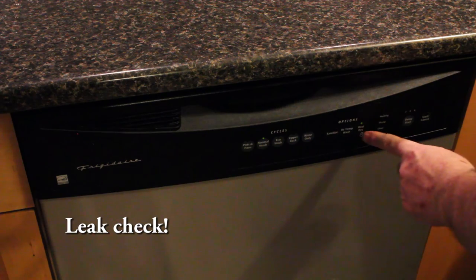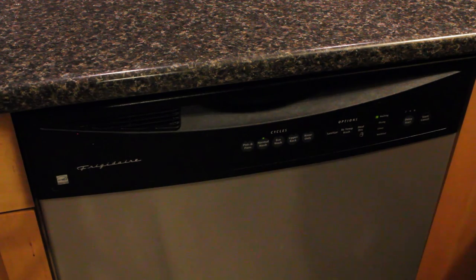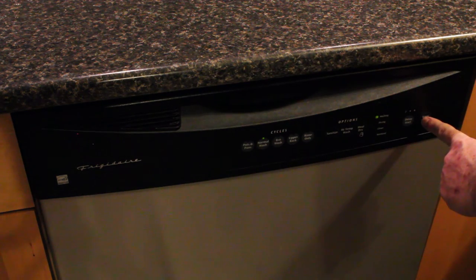Before you put the kick plate back on the bottom, put a towel down and sit there with a flashlight while you run the dishwasher through a cycle just to make sure you don't have any leaks. If you don't have any leaks, you're good to go. You're finished.